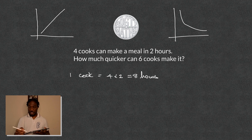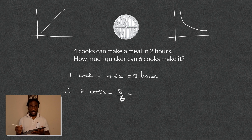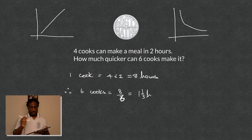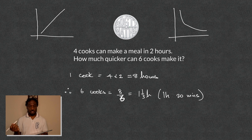Now we have six cooks, and if we have six cooks that means it should take even less time to get the job done. So six cooks will take eight hours divided by six. Eight divided by six gives us one and a third of an hour — a third of an hour is 20 minutes, so in other words one hour and 20 minutes. You can see the inverse proportion happening because as you get more cooks, it takes less time.